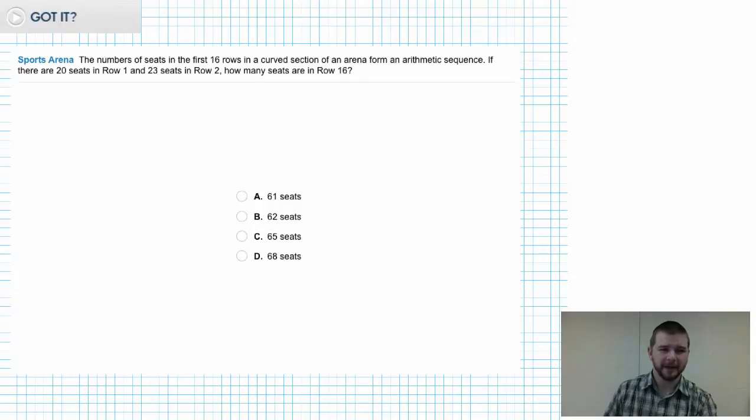And a chance to show that you have got it. The numbers of seats in the first 16 rows in a curved section of an arena form an arithmetic sequence. If there are 20 seats in row 1 and 23 seats in row 2, how many seats are in row 16? Work carefully and make your selection from the choices below.